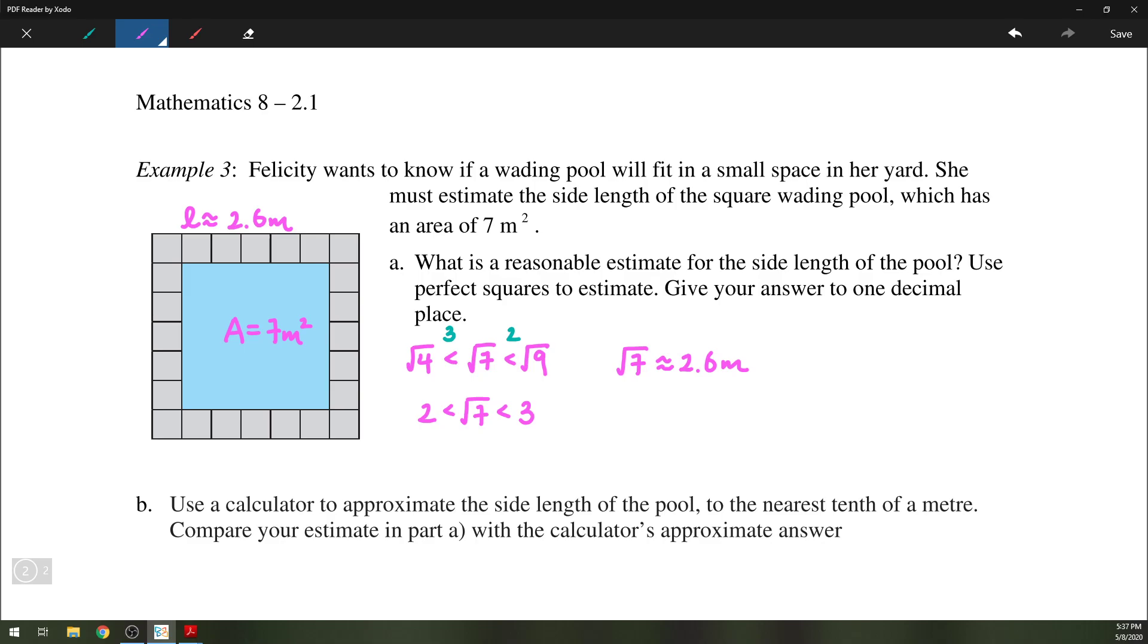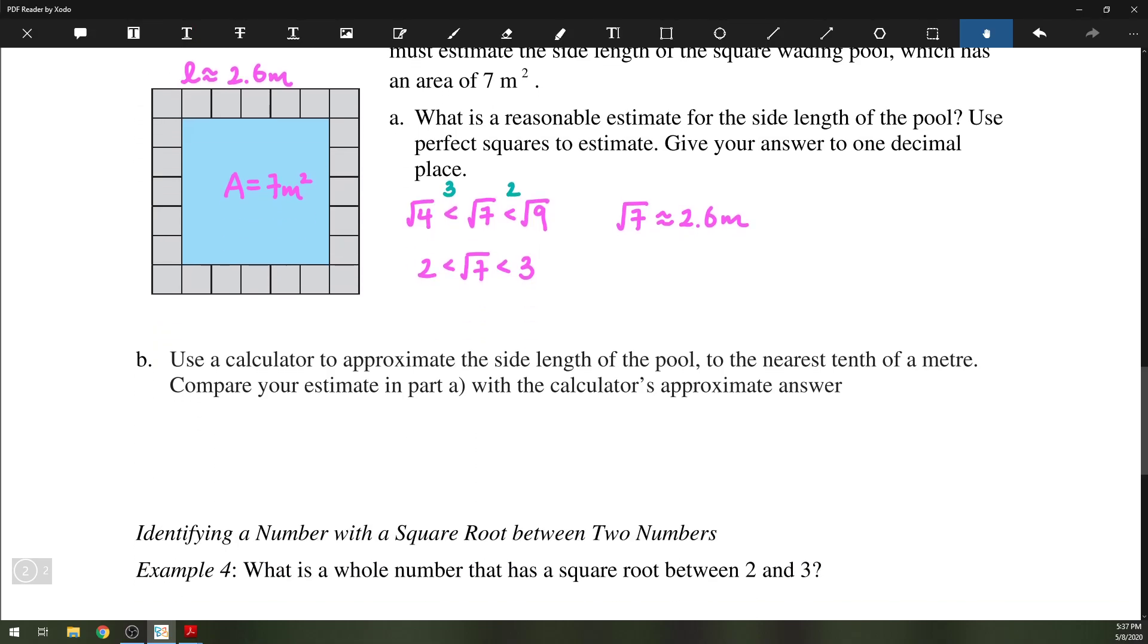And of course, if you use a calculator to find the value, you will see that it is approximately equal to 2.6457, and the number does not terminate nor repeat. So I'm just going to write down a few decimal places and that will be sufficient. It is going to be an approximate answer.